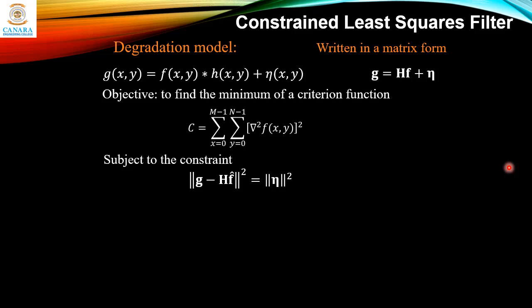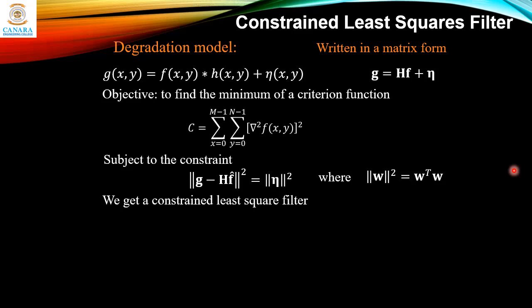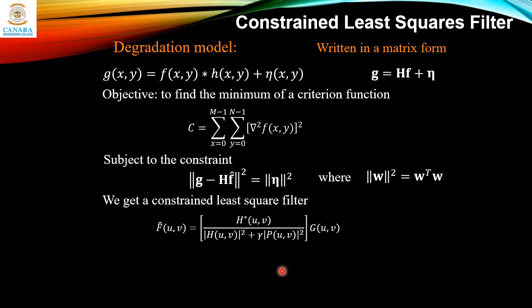This minimization is subject to the constraint ‖g − Hf̂‖² = ‖η‖², where ‖w‖² = w^T·w is the Euclidean vector norm and f̂ is the estimate of the undegraded image. From this we obtain the Constrained Least Squares filter: f̂(u,v) = [H*(u,v) / (|H(u,v)|² + γ|P(u,v)|²)] · G(u,v).